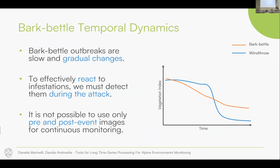From a remote sensing point of view, bark beetle is a very interesting case because unlike windthrow — where you have a very distinct shift in spectral signature — bark beetle has a much more gradual dynamic. If you want to be reactive to infestation, you cannot only detect it at the end of attacks, because at that point it can be considered a high-intensity change. You need to detect it in the middle of the attack in order to apply field strategies to mitigate the spread of bark beetles.